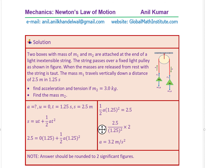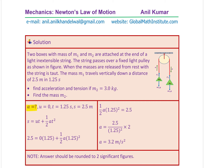Let's first calculate the acceleration. The initial velocity is zero, time is 1.25 seconds, and displacement is 2.5 meters. The formula which relates them is s equals ut plus half at squared. Substituting the values, U is zero so the first term is zero, and we are left with half at squared. Rearranging, we get A as 2.5 divided by 1.25 squared times 2, which calculates as 3.2 meters per second squared.